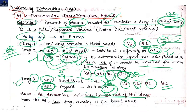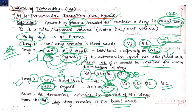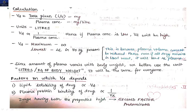More volume of distribution means more extravascular deposition, meaning intravascular concentration is less. Coming to the calculation: VD equals dose given divided by plasma concentration. Dose is in mg and plasma concentration is in mg per liter, so VD is in liters. Volume of distribution is inversely proportional to plasma concentration. If plasma concentration is low, VD will be high. VD can theoretically go to infinity; the lowest value is 4 liters in a 70 kg person, because plasma volume cannot be reduced below that.